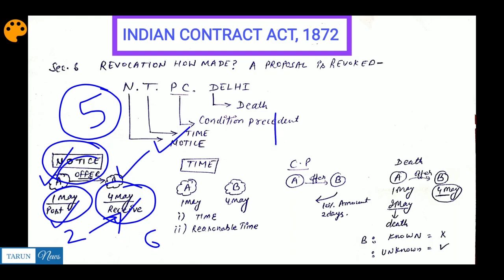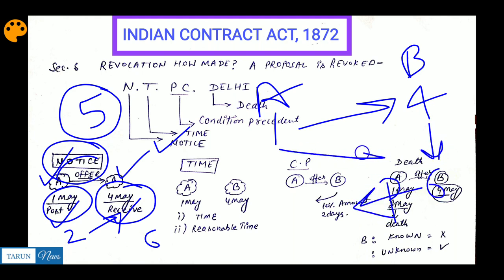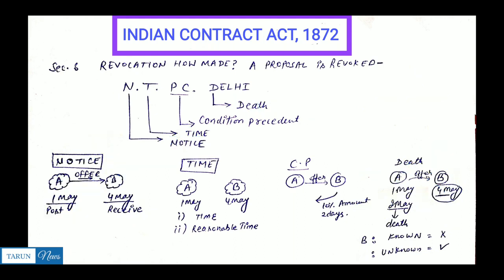As per Section 5, until when is the notice valid? Until B accepts. As we have written here, A sent the offer letter on the 1st, B receives it on the 4th. Two days later, on the 6th, B posts the acceptance. So A can send the revocation letter before the 6th. You can send the notice, but the time period we discussed in the last class applies - A can send it before the 6th only.